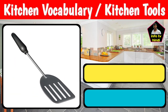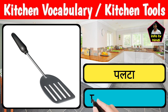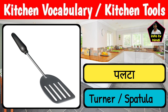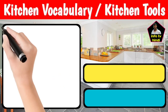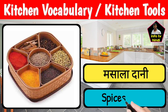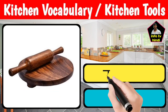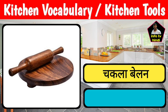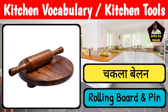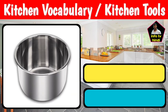अगला है — पल्टा, जिसे अंग्रेजी में Turner या Spatula कहते हैं। अगला है — मसाला दानी, जिसे अंग्रेजी में Spice Tray कहते हैं। अगला लिया है मैंने — चकला बेलन, जिसे अंग्रेजी में Rolling Board and Pin कहते हैं।